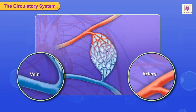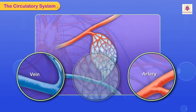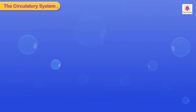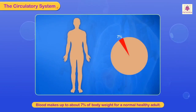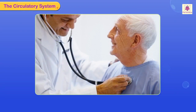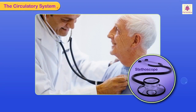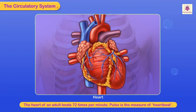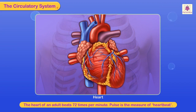There are three types of blood vessels in the human body. Arteries and veins are large blood vessels, and capillaries are thin, hair-like blood vessels. Blood makes up about seven percent of body weight for a normal healthy adult. Doctors use an instrument called a stethoscope to listen to and count your heartbeat. The heart of an adult beats 72 times per minute. Pulse is the measure of heartbeat.